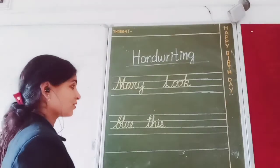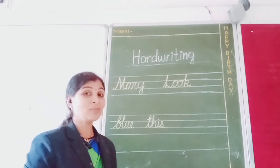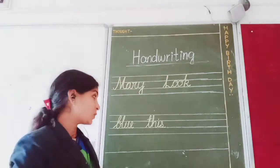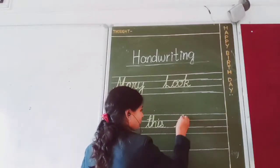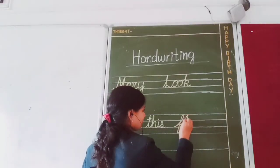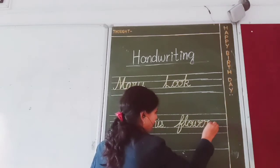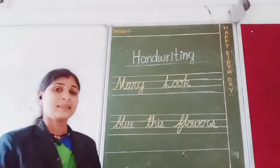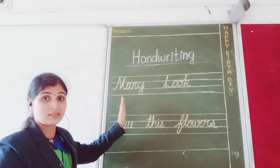Now children, we are going to use more than four letters. We are going to use more than four alphabets. See — 'flowers.' Here one, two, three, four — there are four letters, four alphabets.